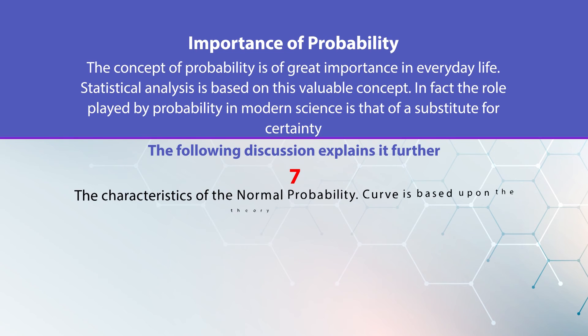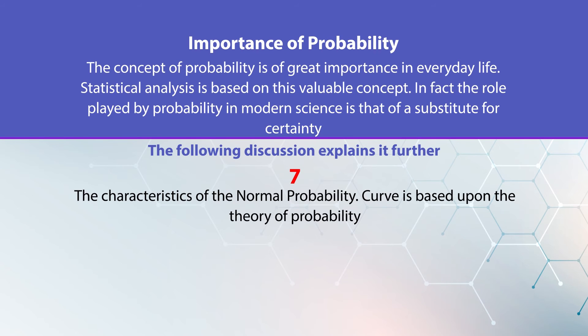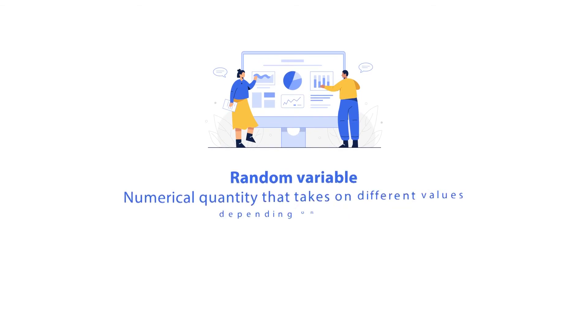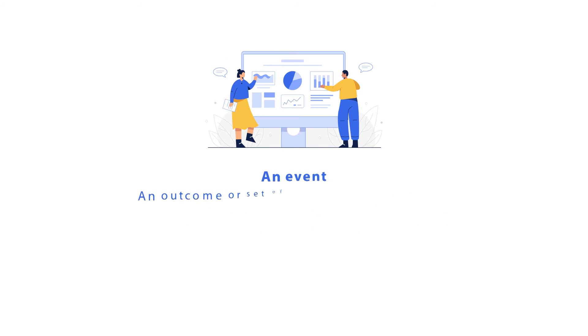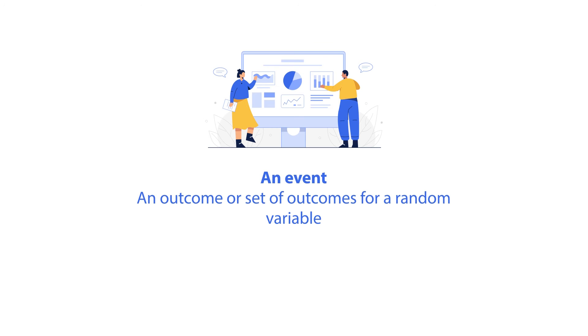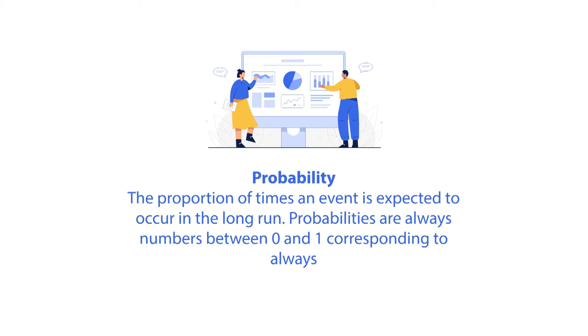The concept of probability is not only applied in business and commercial lines — it is also applied to all scientific investigations in everyday life. Before knowing statistical decision procedures, one must know about the theory of probability, and the characteristics of the normal probability curve are based on the theory of probability. A random variable is a numerical quantity that takes on different values depending on chance. A population is the set of all possible outcomes for a random variable — only a hypothetical population, not a population of people. An event is an outcome or set of outcomes for a random variable. Probability is the proportion of times an event is expected to occur in the long run, and probabilities are always numbers between 0 and 1.